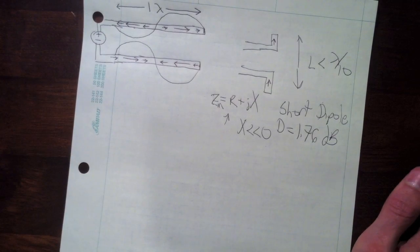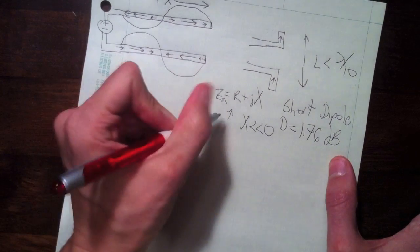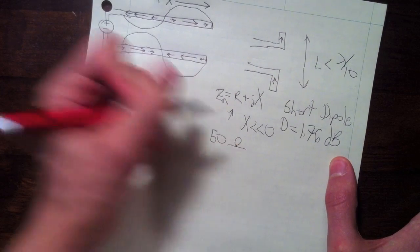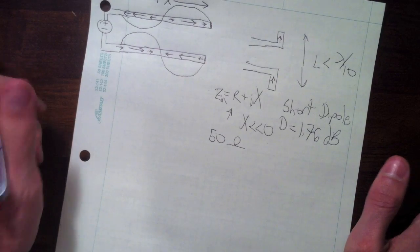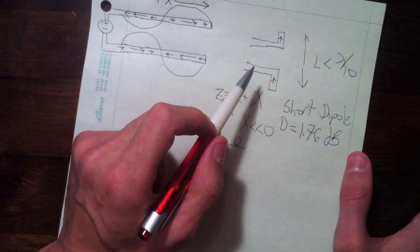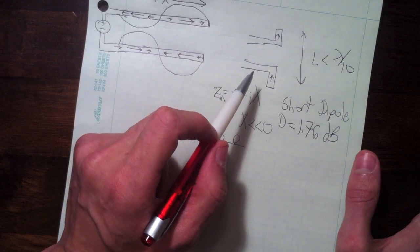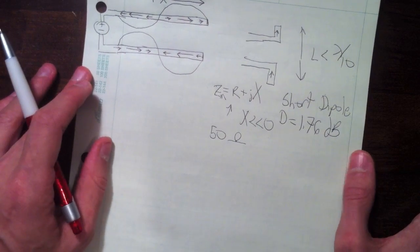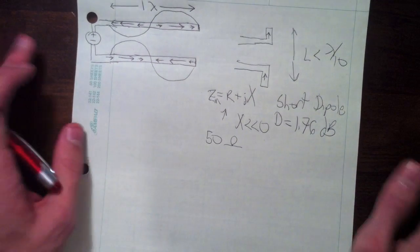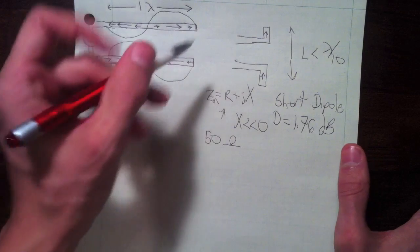So, because the impedance isn't going to be anywhere matched at 50 ohms or any real transmission line impedance, you're going to have a very low efficiency for this antenna. It's also going to have very low bandwidth, and those are the shortcomings of this antenna.